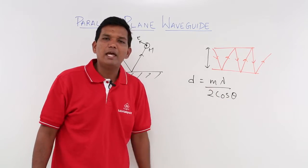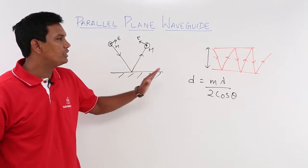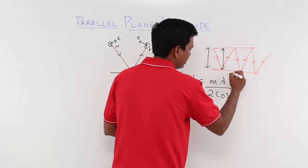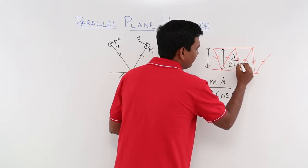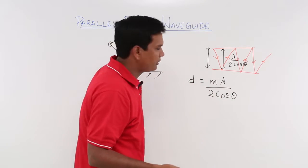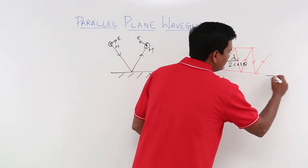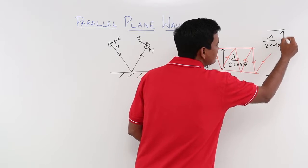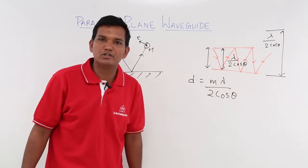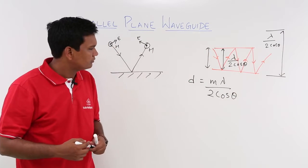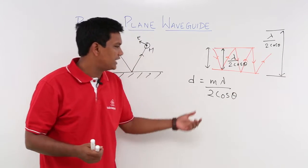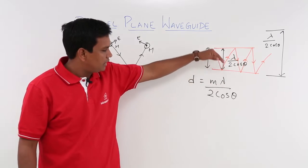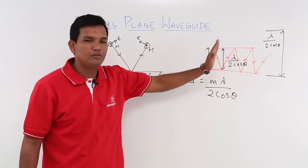One may ask what m is — m is nothing but discrete numbers. So if you want to make a waveguide, if m equals 1, the distance between the plates should be λ/(2·cosθ). If you want m equal to 2, that will be another structure — the distance between the two plates would be λ/cosθ. In that case also, the wave will not lose any energy.